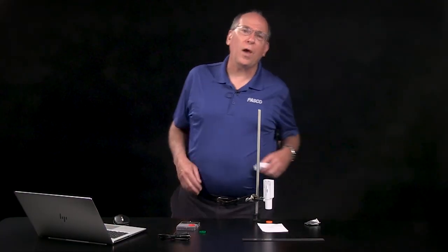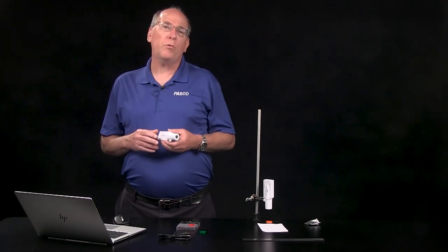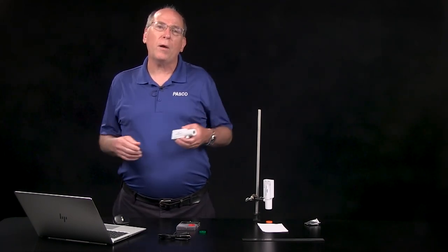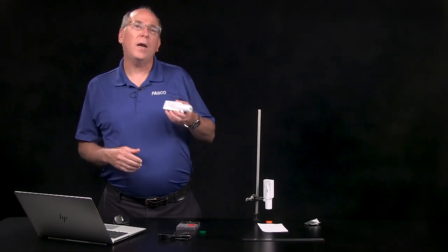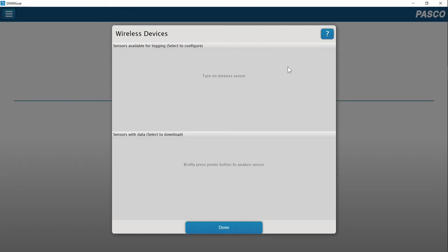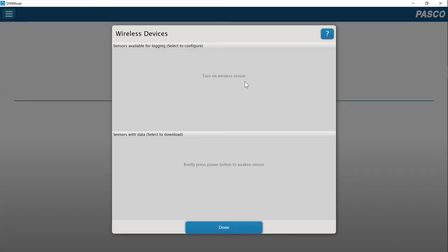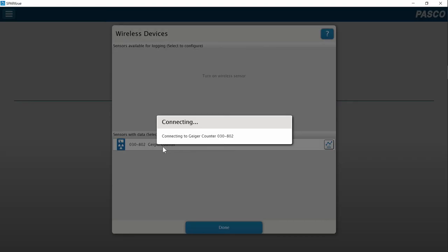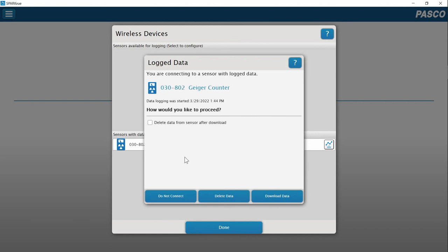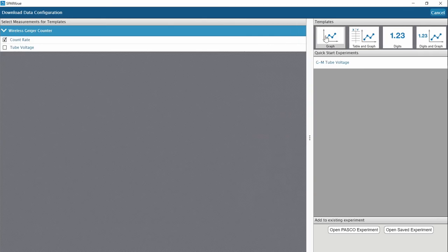I configured this Geiger counter for remote logging a few days ago. I wanted to answer the question, what happens to the background count when the sun goes down? The data can be downloaded by clicking Remote Logging again. It detects that there is logged data and asks what I want to do. Let's download the data and display it as a graph.